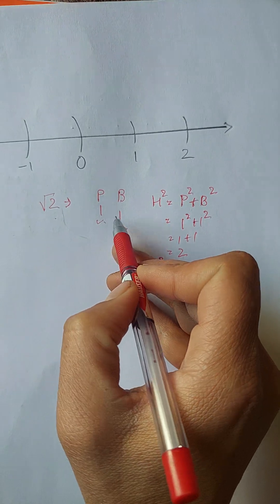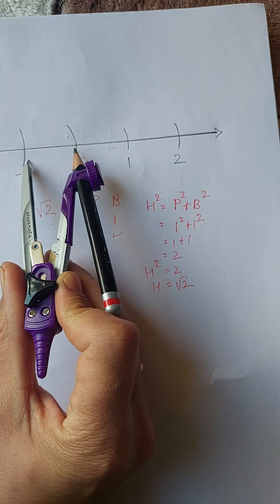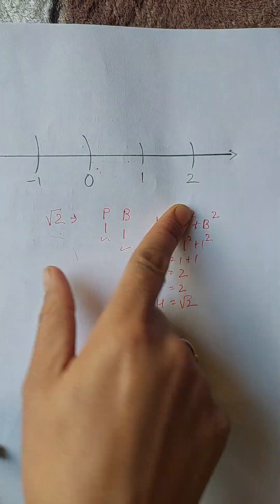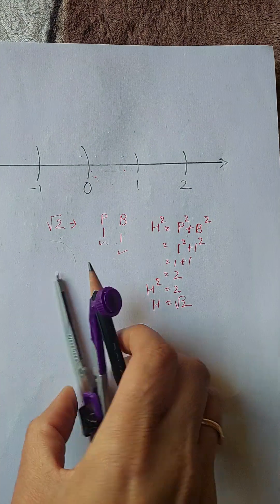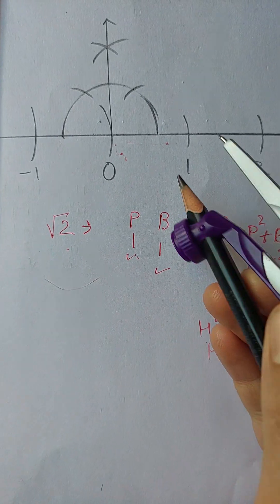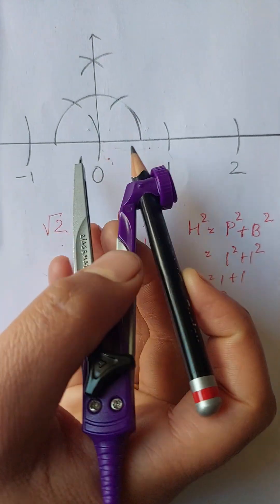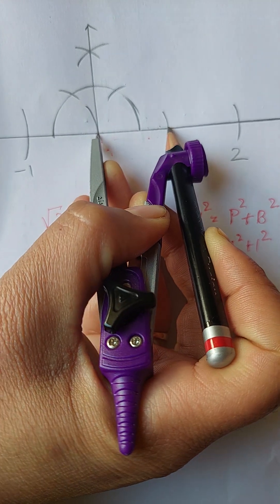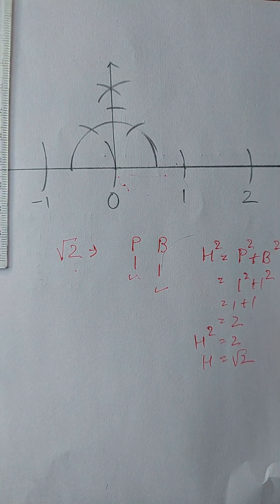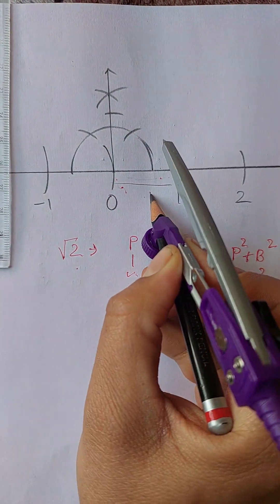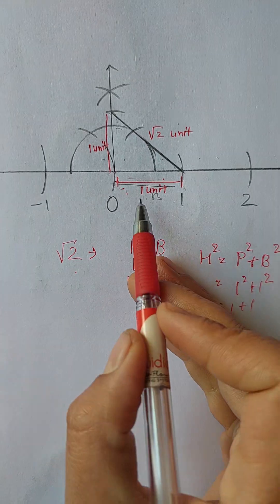Let's construct a right angle triangle whose perpendicular and base are each one unit. We have to locate root two on this number line, so we'll get root two of this number line. I constructed 90 degrees here because I'm constructing a right angle triangle. This is acting as the base — the base is one unit — and the perpendicular is also one unit. Now I'm joining this point to this point to get the hypotenuse.